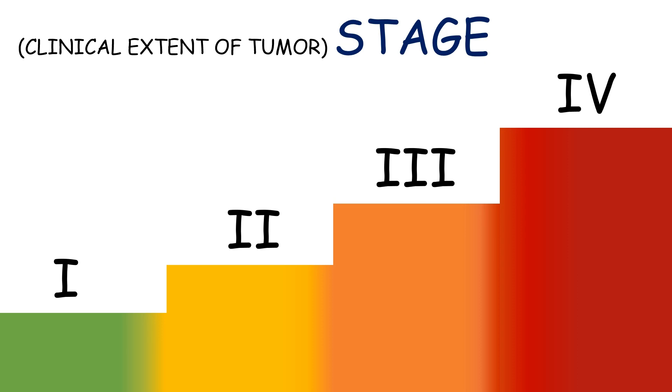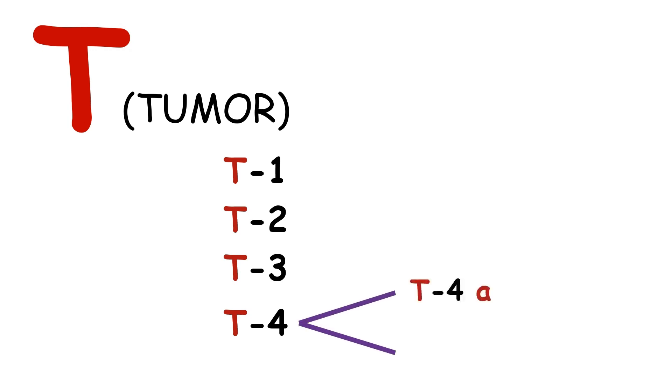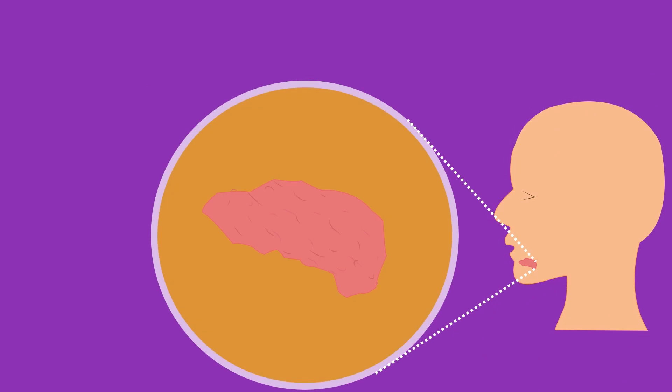Before jumping into the stages, let's first see each category of TNM closely. The T of TNM describes the tumor, which is divided into four major categories: T1, 2, 3, and 4, while T4 is further divided into subcategories type A and B.